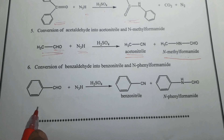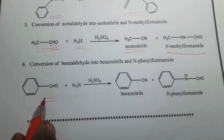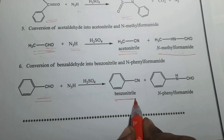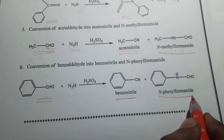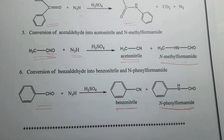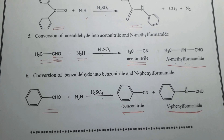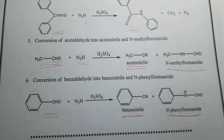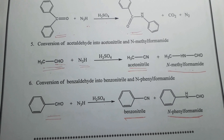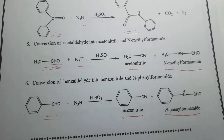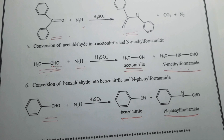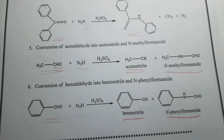Similarly, another example under the aldehyde category: benzaldehyde on Schmidt reaction gives the nitrile derivative benzonitrile and the N-formyl derivative N-phenylformamide. To summarize the applications of Schmidt reaction: carboxylic acids are converted into primary amines, ketones are converted into N-substituted amides, and aldehydes are converted into a mixture of nitrile and N-formyl derivatives.